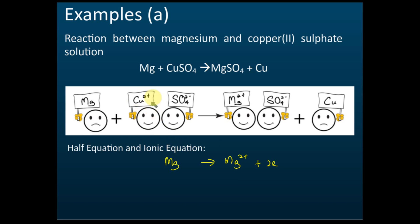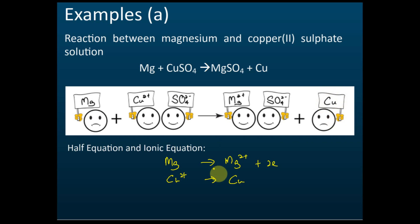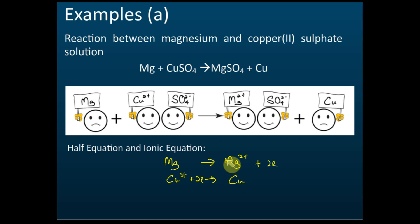Now for copper: before the reaction we have copper ions, Cu²⁺, and after the reaction they become copper metal. This is also not balanced, so we add electrons — this time to the left-hand side, so that the sum of the charges is zero on both sides. These two are the half equations for the reaction.